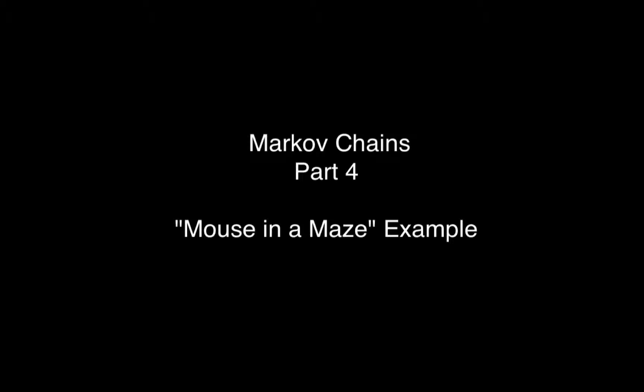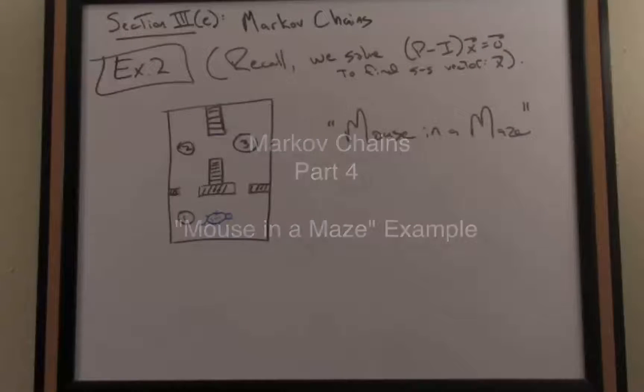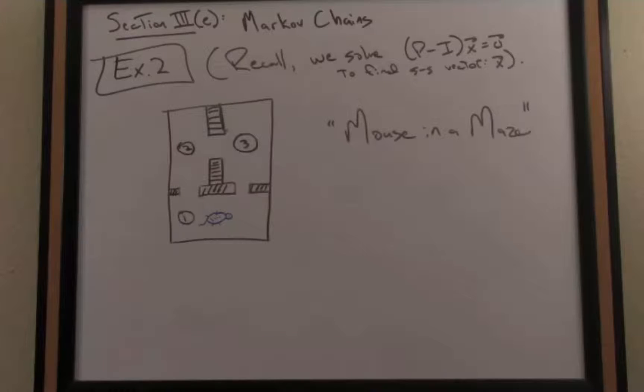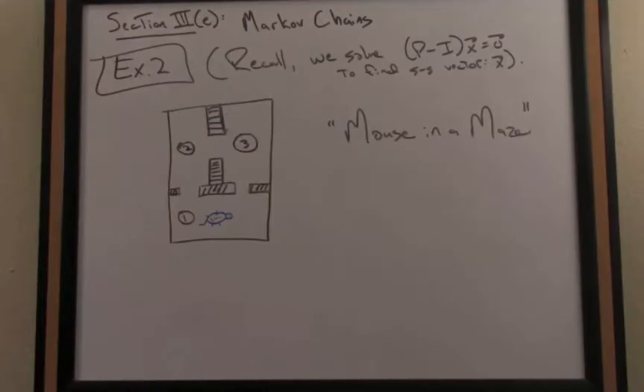Let's look at another example for Markov chains. This is sometimes known as the mouse in a maze model. I want to recall from the previous slide that I was showing you how to find a steady-state vector for a stochastic matrix by solving the corresponding system of linear equations.